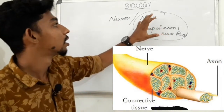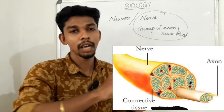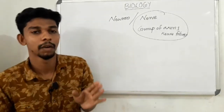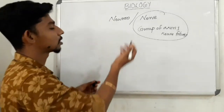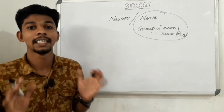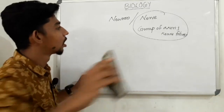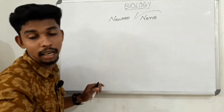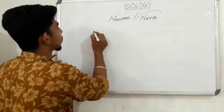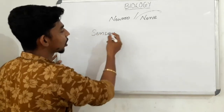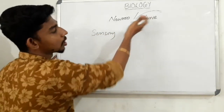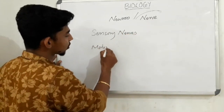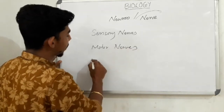The nerve is formed. In terms of function, the direction of the nerve will be classified. Based on the function, the neurons are classified into three types: sensory nerves, motor nerves, and mixed nerves.